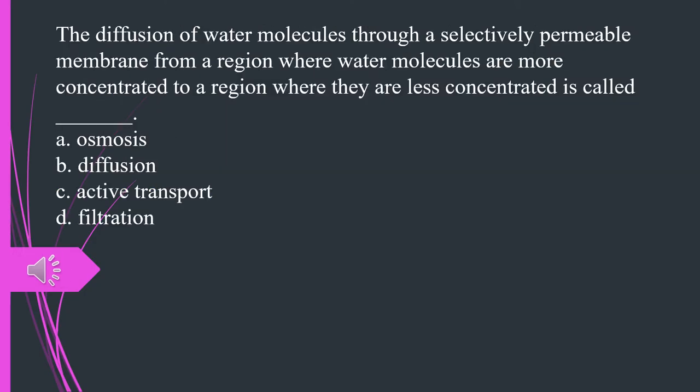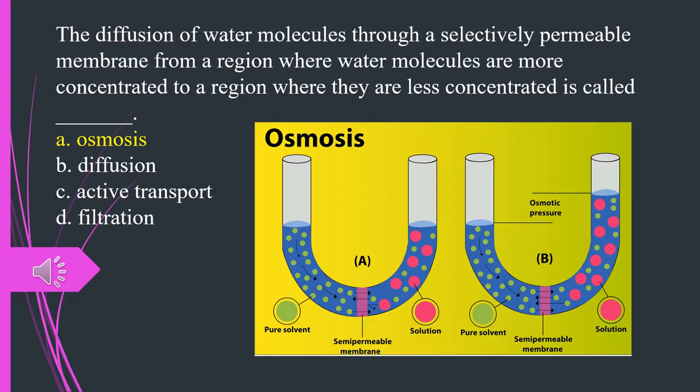The diffusion of water molecules through a selectively permeable membrane from a region where water molecules are more concentrated to a region where they are less concentrated is called what? A. Osmosis. B. Diffusion. C. Active transport. D. Filtration. The answer is A. Osmosis.